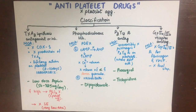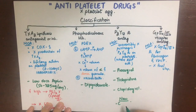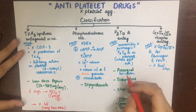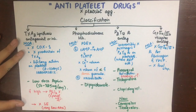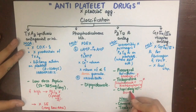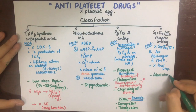P2Y12 receptor antagonists include prasugrel, ticlopidine, and clopidogrel. Newer forms include cangrelor and ticagrelor. Among these, prasugrel is the fastest and most effective, but it carries the highest risk of bleeding. Two important side effects to remember about ticlopidine are neutropenia and thrombocytopenia. Clopidogrel causes mainly diarrhea. The newer P2Y12 receptor antagonists — cangrelor and ticagrelor — are reversible, compared to the older irreversible ones.